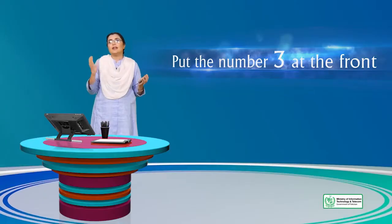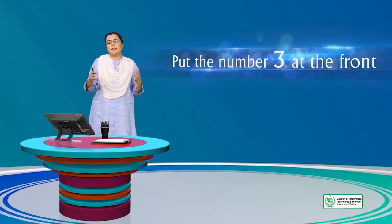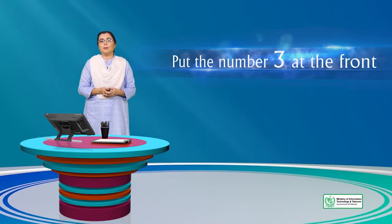When you say 3 things, people feel they already know how many points are coming. But if you say 10, 20, or 37, most people don't know how long the list is going to be. So 3 is seen as a very ideal number.